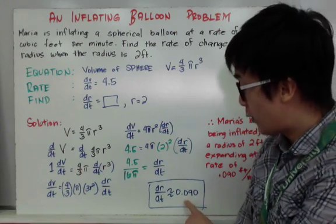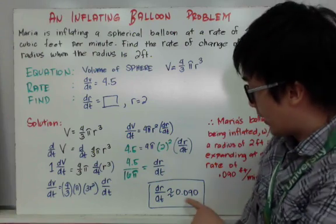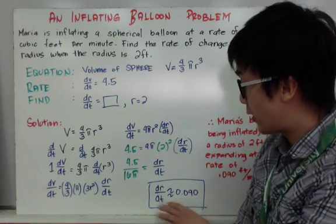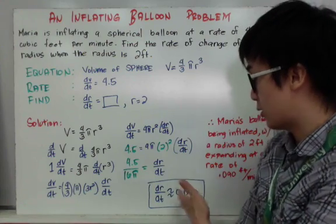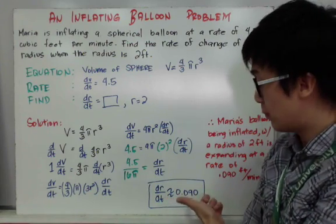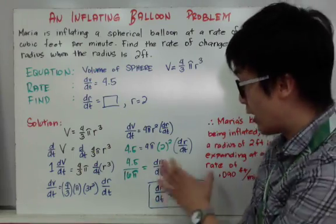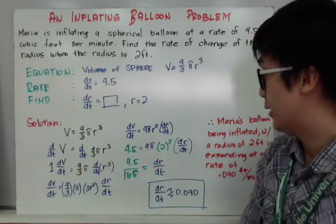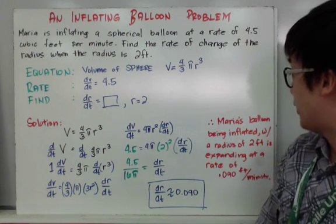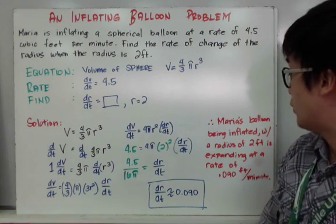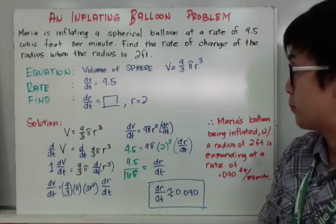Take note of how you round off your answer. In AP calculus, you are required to round your answer to the nearest thousandth — always three decimal places after the decimal point. Therefore, the conclusion is that Maria's balloon, being inflated with a radius of two feet, is expanding at a rate of 0.090 feet per minute.